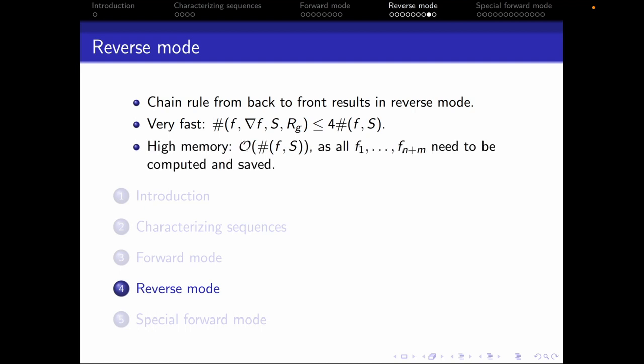One potential problem is that reverse mode requires high memory — like the forward mode we introduced — on the order of the complexity of f. This is because we have to pre-compute all the temporary function values f1 through f_{n+m}. We need to save all of these so that we can then perform the reverse multiplication of the product. This could be a potential problem if you have a huge function to evaluate.